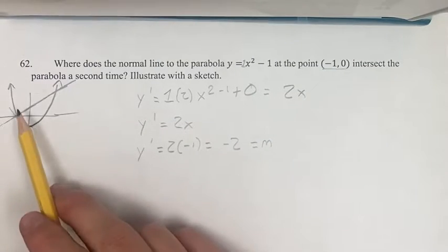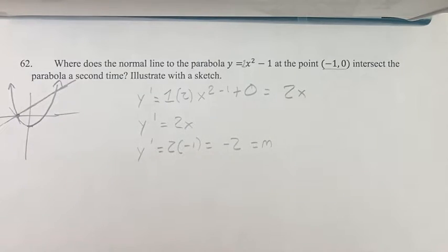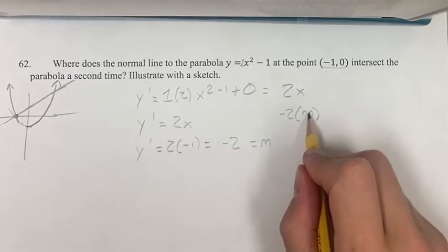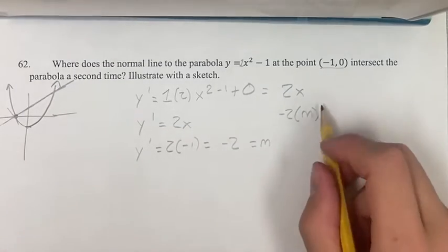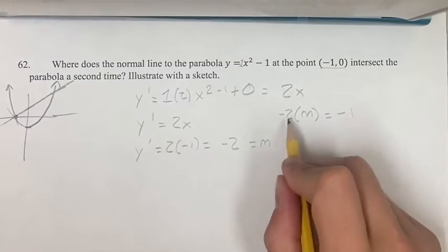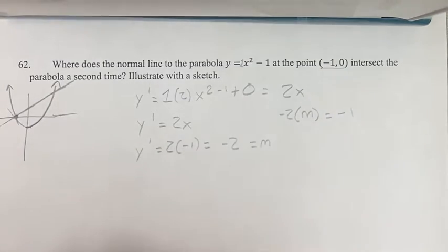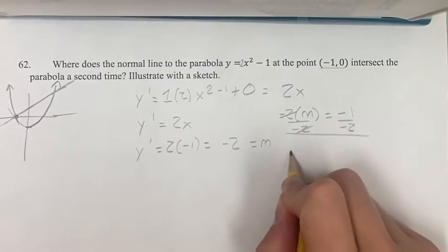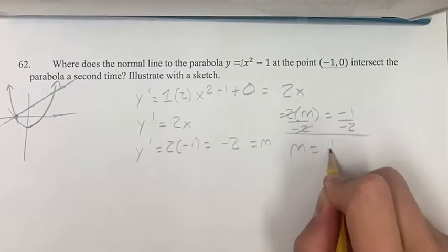Since the tangent line and the normal line are perpendicular to each other, that means their slopes are opposite reciprocals. That means negative 2 times the slope of the normal line is equal to negative 1. They're negative reciprocals because they multiply to get negative 1. Divide by negative 2. m is equal to negative 1 divided by negative 2 is 1 half.